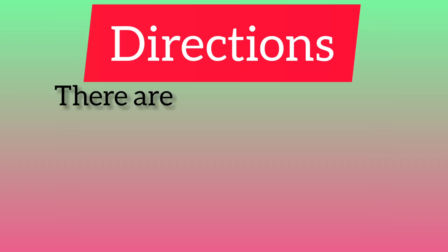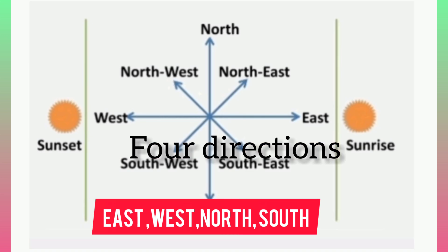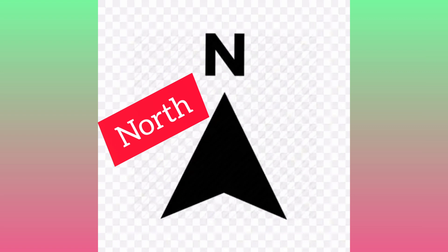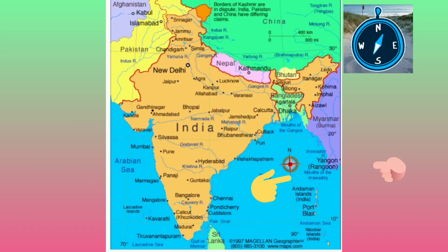Let's discuss about directions. We all know that we have four directions. Map directions are different from the general directions. Always in all maps, north is indicated at the top. Here is an example, please watch it.